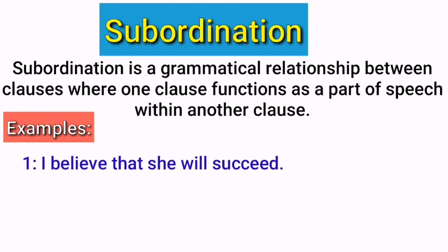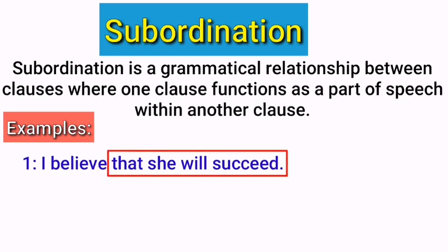Consider the example: 'I believe that she will succeed.' The group of words 'that she will succeed' is the subordinate clause, and it functions as a noun — a part of speech. This subordinate clause plays the role of a single noun, functioning as the object of the sentence. This is an example of subordination in syntax.